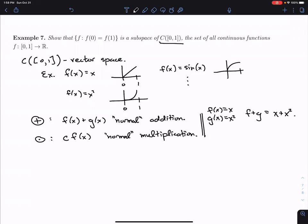And then if I take the same F here and take C to be seven, then CF would be the new function, seven times x. So this forms a vector space. You can check all the axioms of vector spaces. They still hold here.